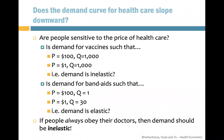What about the demand for band-aids? Suppose one box costs $100 and people buy one box. But if band-aids dropped to $1 per box, people now buy 30 boxes. We see that this is elastic demand because the quantity purchased is sensitive to price.